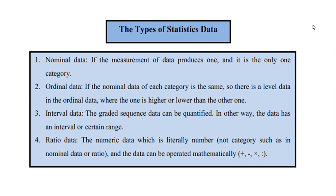Number three is interval data — the data has an interval or certain range. Number four is ratio data — it is numeric data, literally numbers rather than categories like in nominal or ordinal data. Ratio data can be operated mathematically, such as addition, subtraction, and other operations.